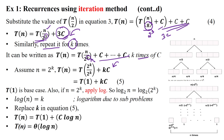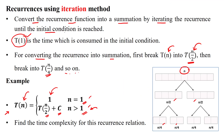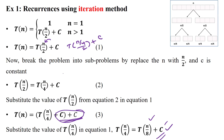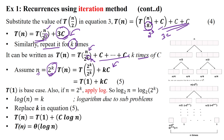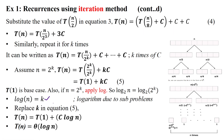To reach the initial condition T of 1, we apply n = 2^k. Taking logarithm on both sides: log base 2 of n = log base 2 of 2^k. This gives log n = k. So now we substitute k = log n into the equation T(n) = T(1) + k*c, where k is log n and c is the constant.